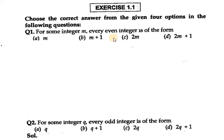Hello everyone. Let's start with exercise 1.1. In this we need to choose MCQs, so we need to choose 1 option out of 4. Question number 1 says: for some integer m, every even integer is of the form.